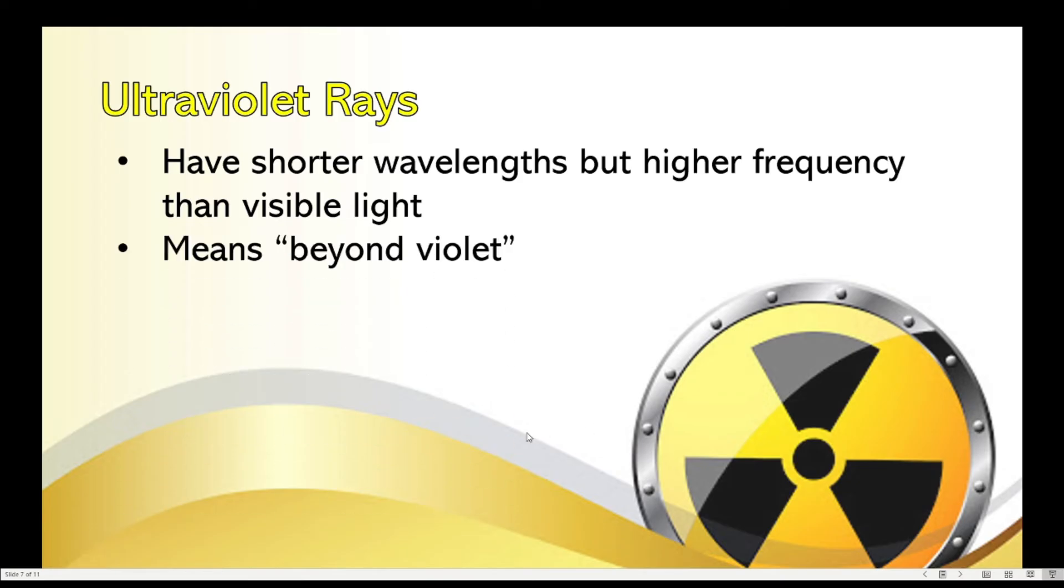Ultra means beyond. So, ultraviolet means beyond violet. They have three kinds, UVA, UVB, and UVC.